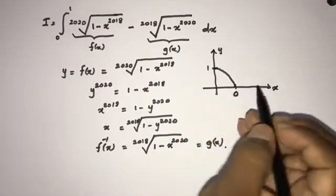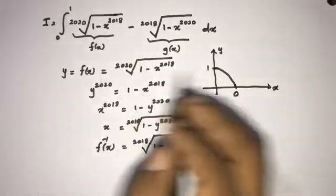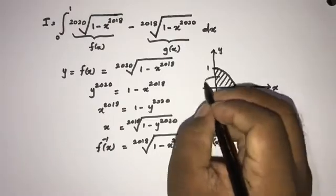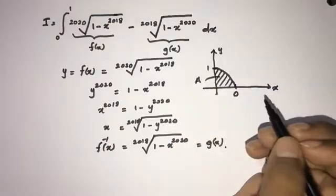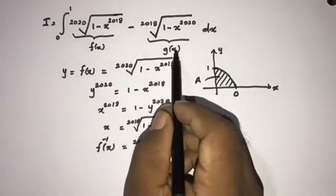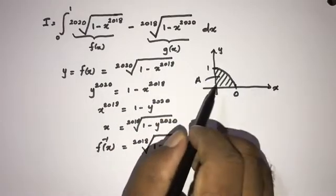Now we don't know exactly what the graph looks like, but the function goes from (0,1) to (1,0). We know the integral from 0 to 1 is equal to this area, so let's call this area A.